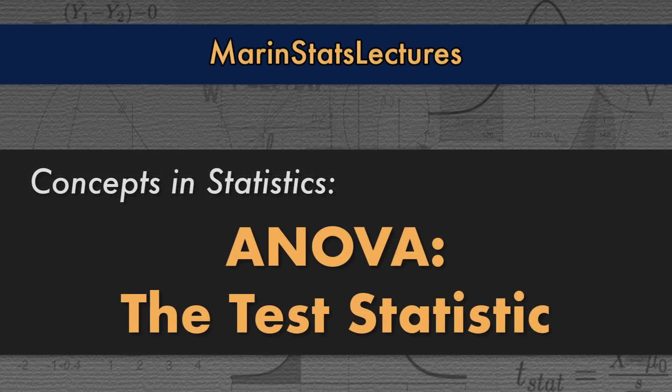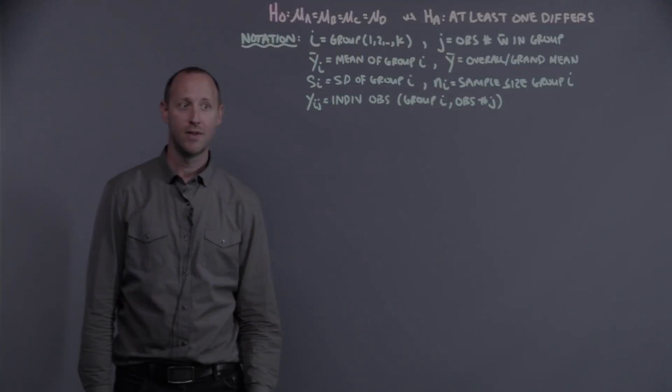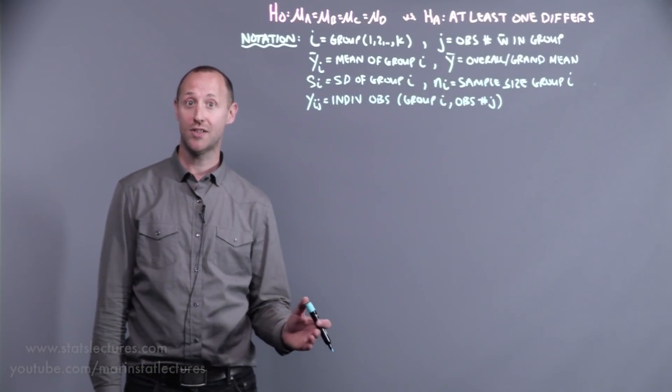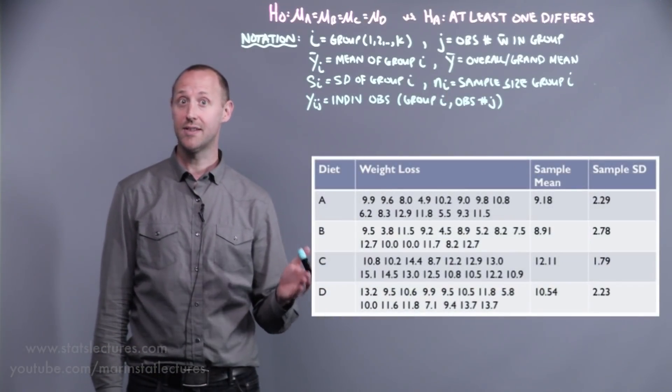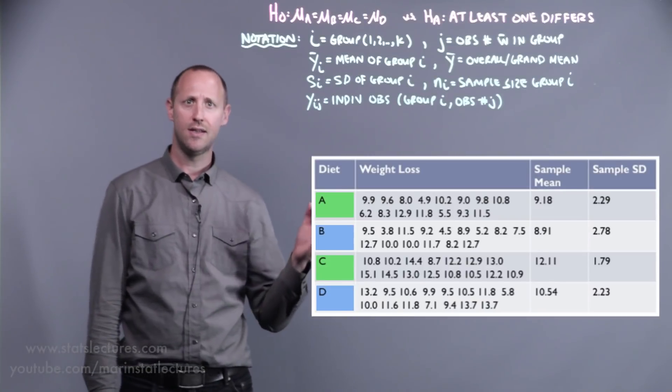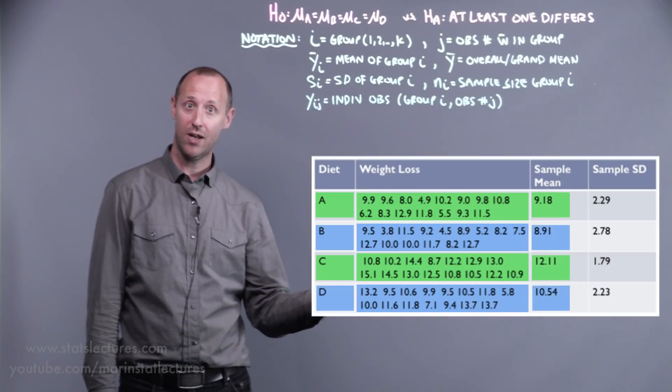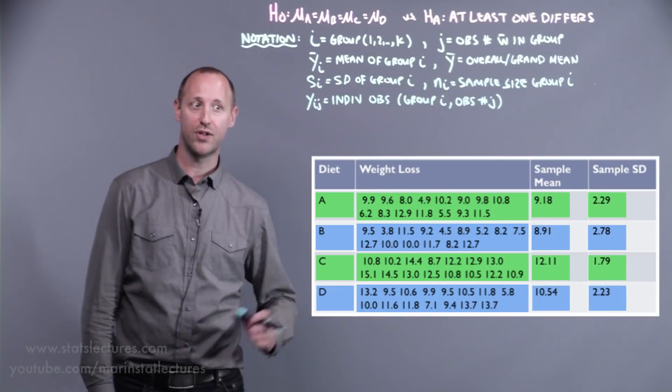So let's build up the test statistic for one-way analysis of variance. Recall we were working with this example, comparing the weight loss on one of four diets: diet A, B, C, or D. And we can see the observations here as well as the summary statistics, the mean weight loss and standard deviation of weight loss for each of the four diets.